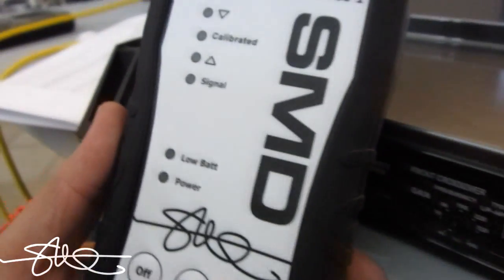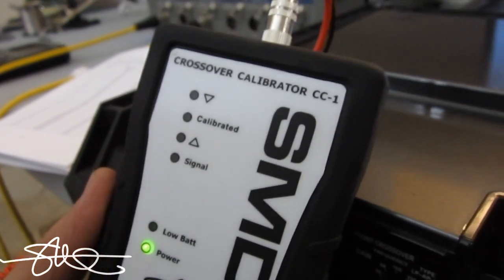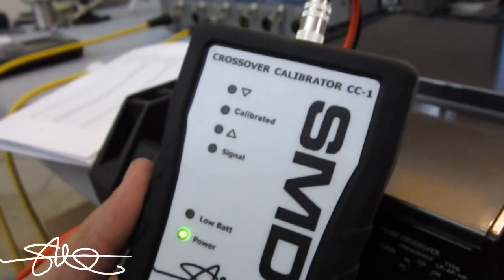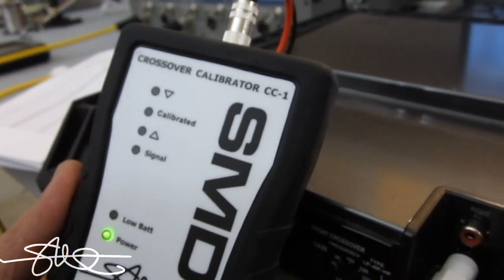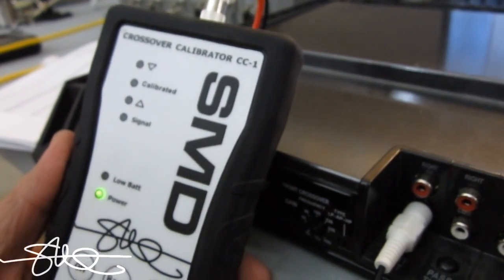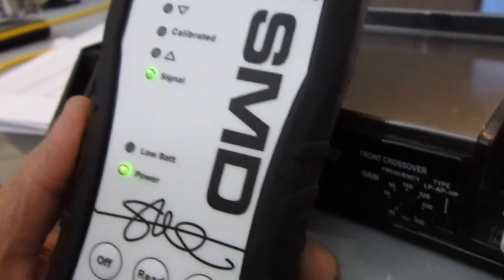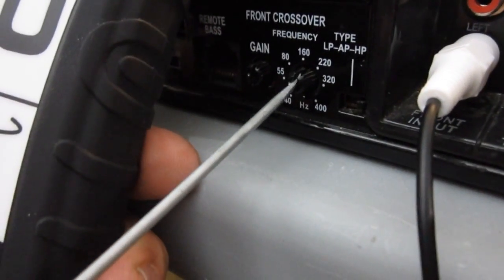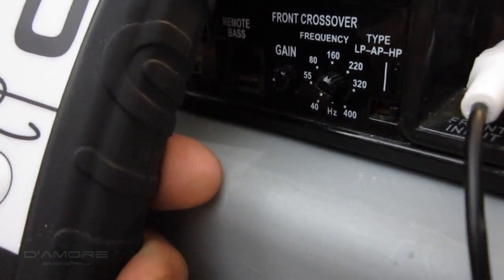There we go. Turn the CC1 on. Make sure I have my RCA plugged into the amp. If that will help. And we're going to go high pass. And in high pass you start with the control all the way down.